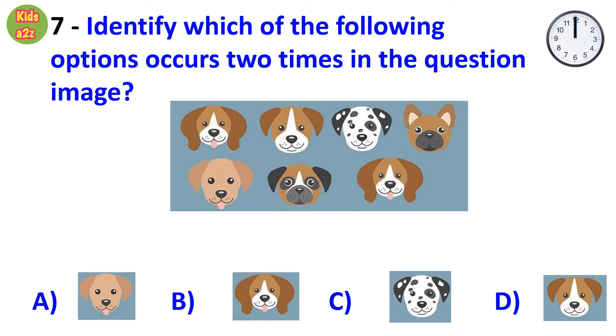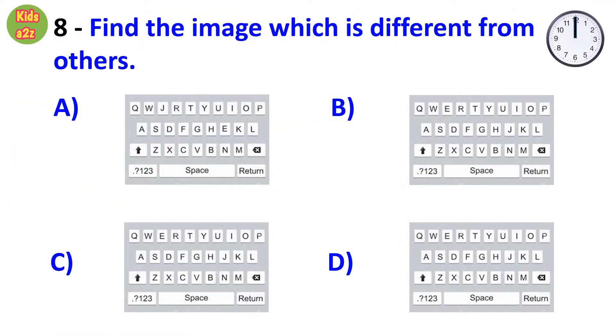Question number 7: Identify which of the following options occurs two times in the question image. Answer is option B.